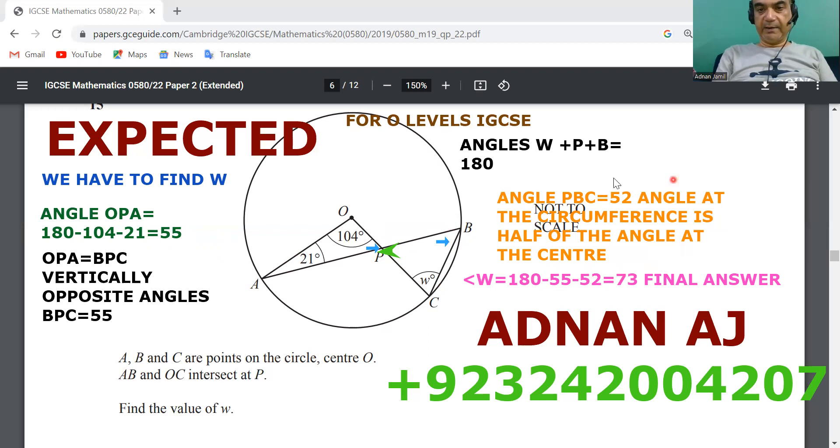So angle PBC will be half of 104, which is equal to 52 degrees.